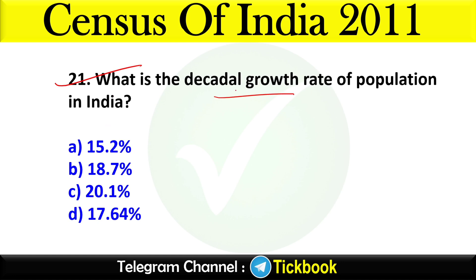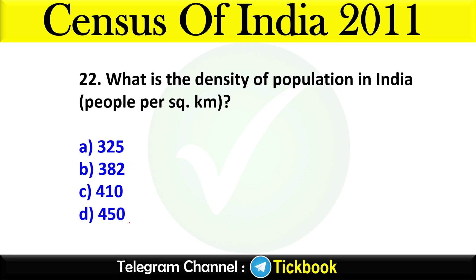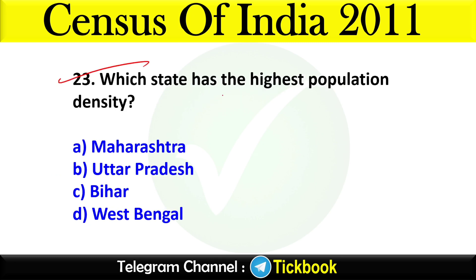Question twenty-one: What is the decadal growth rate of population in India as per the 2011 Census? Option number B is the right answer: 17.64 percent. Question twenty-two: What is the population density in India (people per square kilometer)? Option number B: 382 is the right answer.